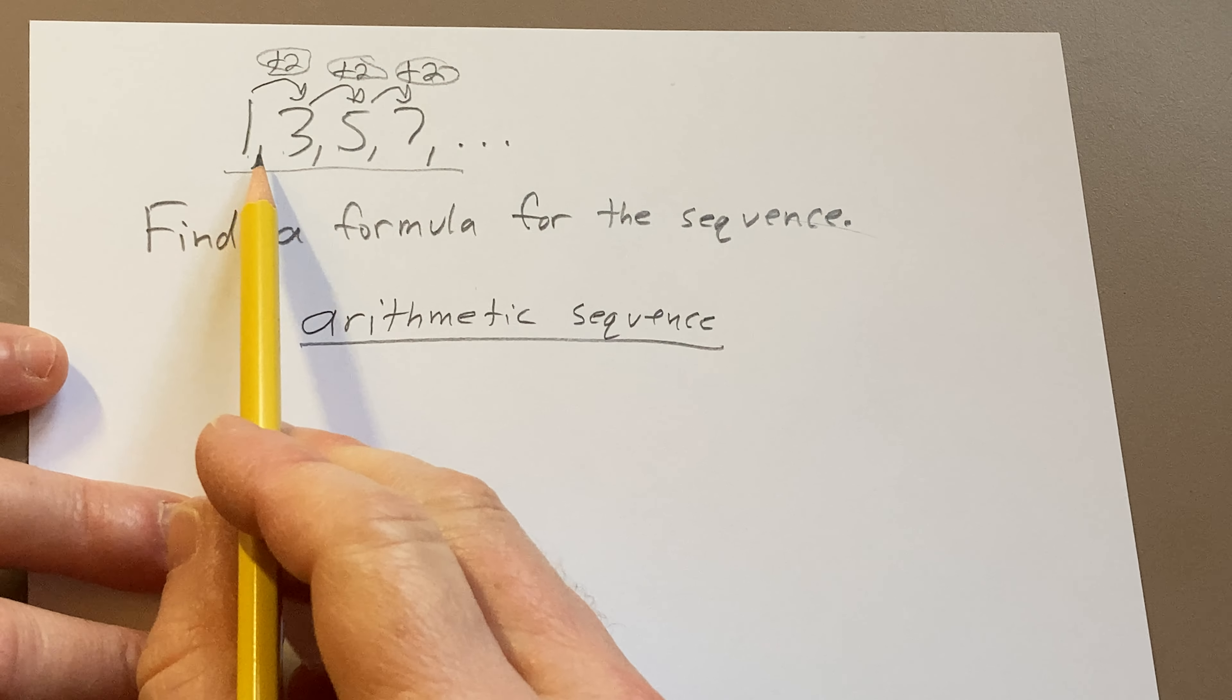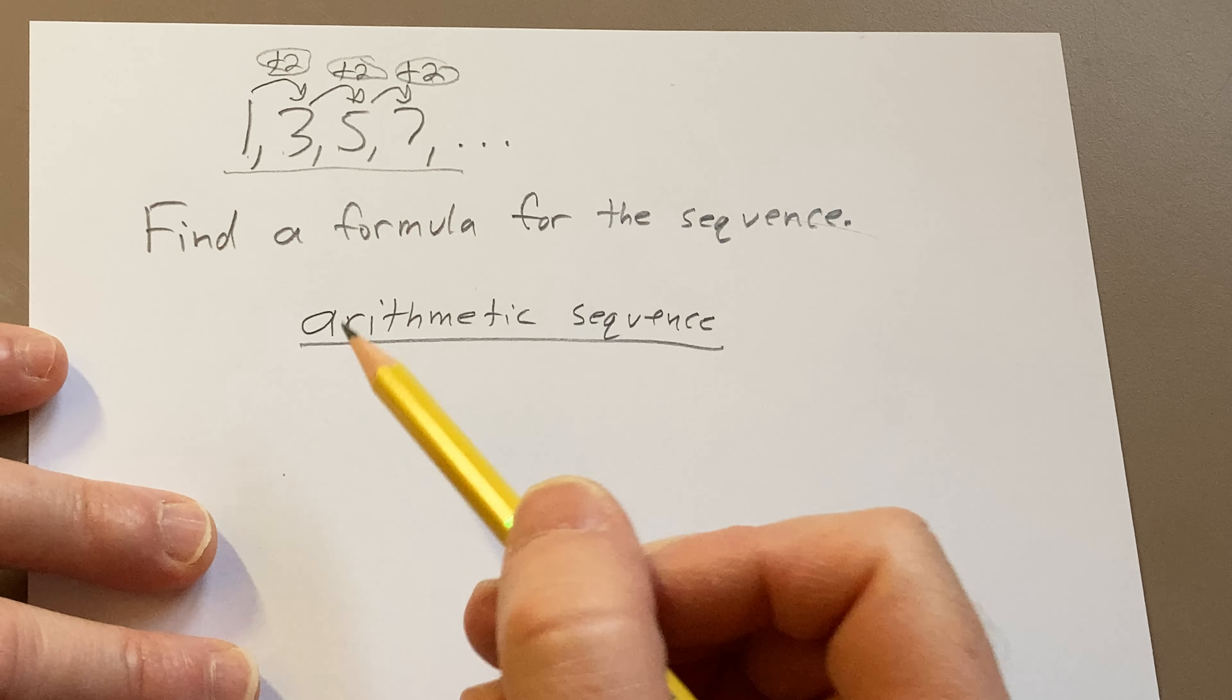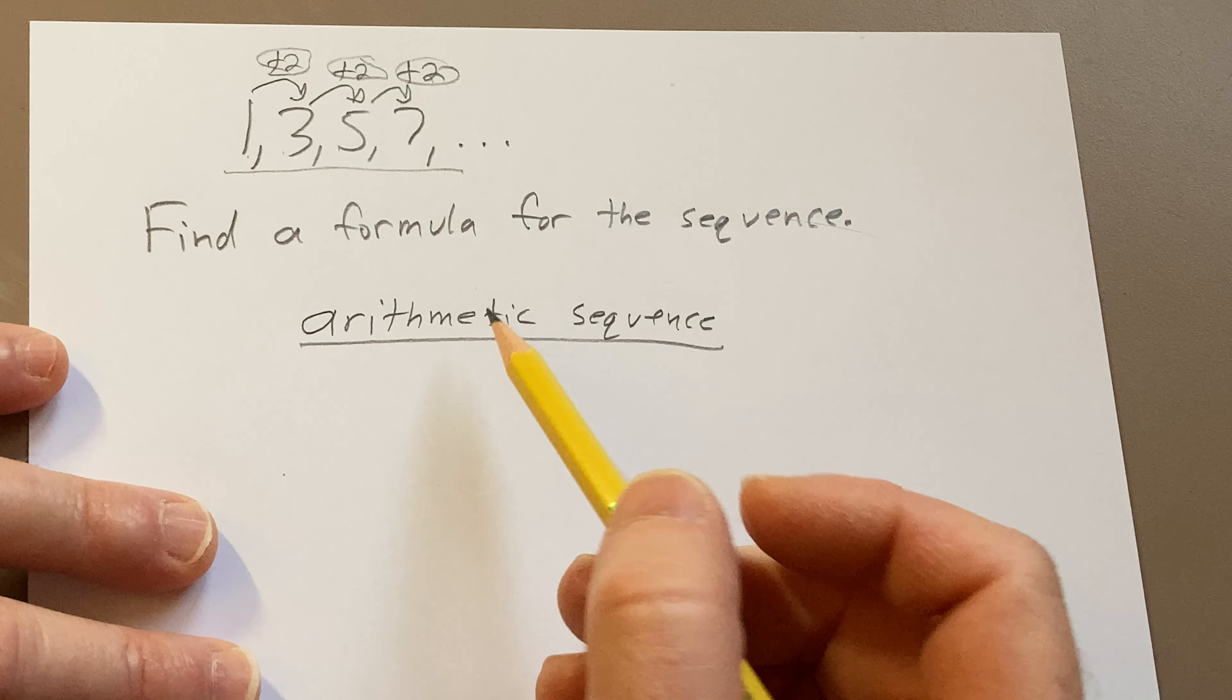So in this particular case, we're adding 2 over and over again. So there is a formula for arithmetic sequences.